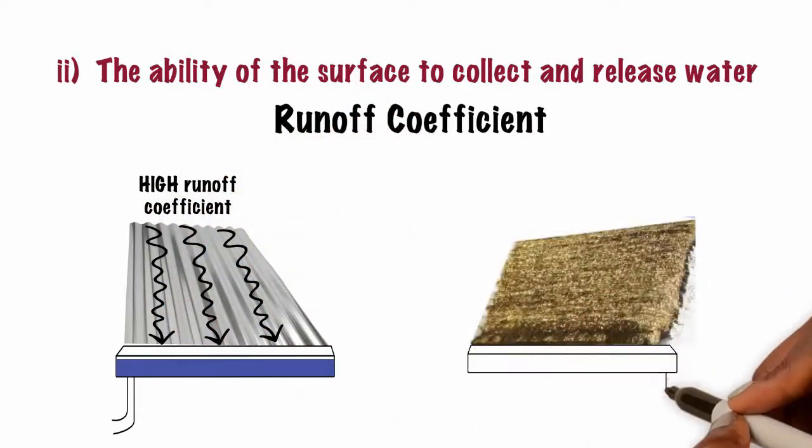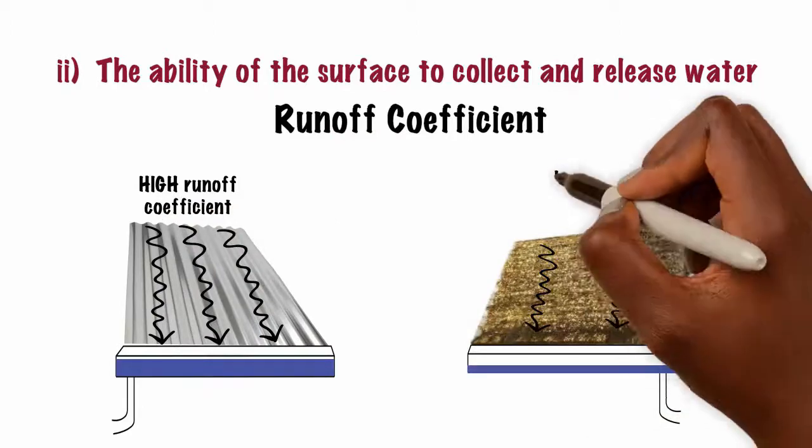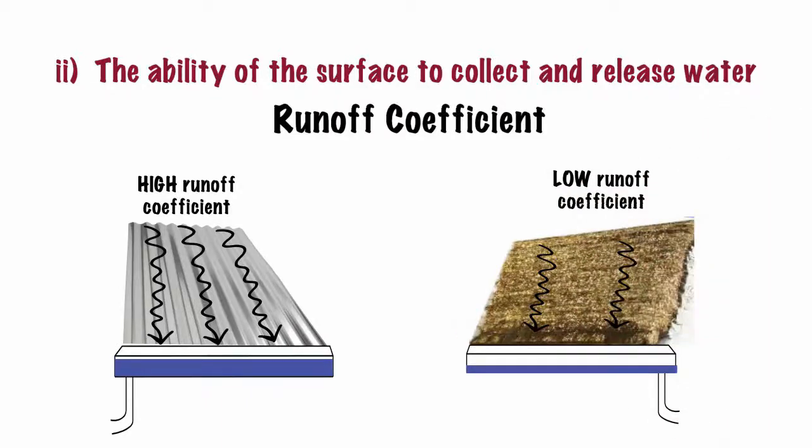However, earth surfaces absorb some of the rain and hence the amount collected from such surfaces is always much lower. In this case, runoff coefficient for a normal earth surface is relatively low.